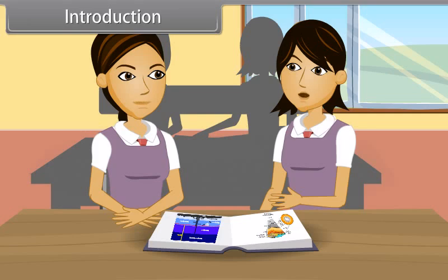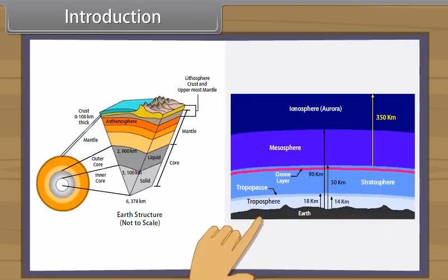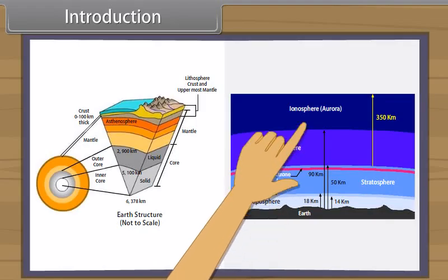Atmosphere includes gaseous cover around the hydrosphere and lithosphere like a blanket. Atmosphere extends to several kilometers in height from the surface of earth. It is differentiated into four parts: troposphere, stratosphere, ozonosphere, ionosphere.